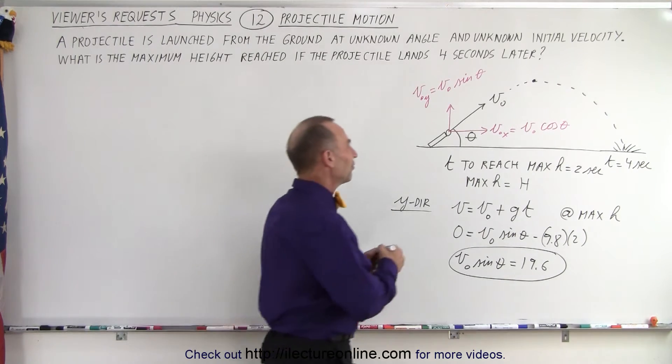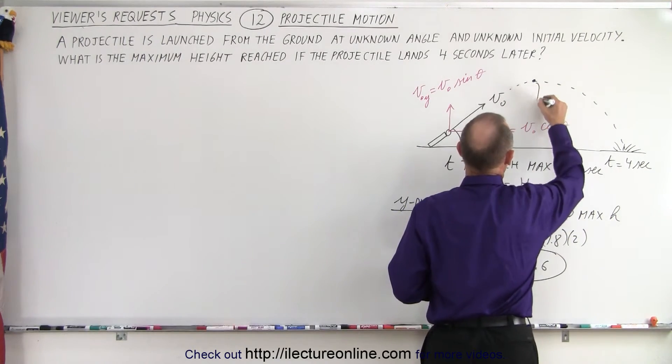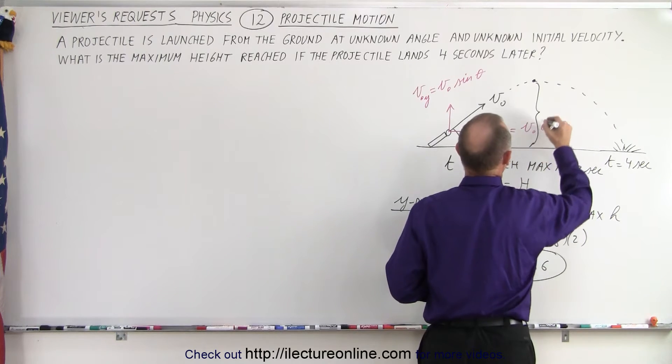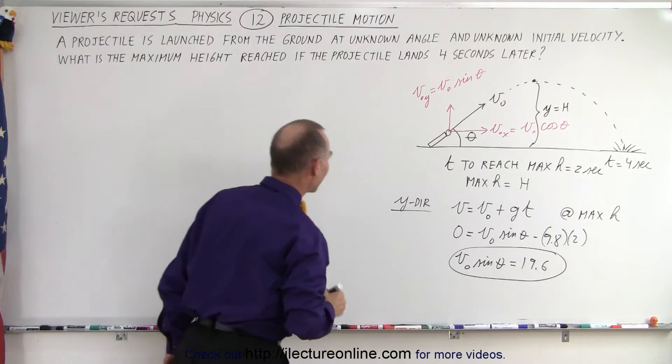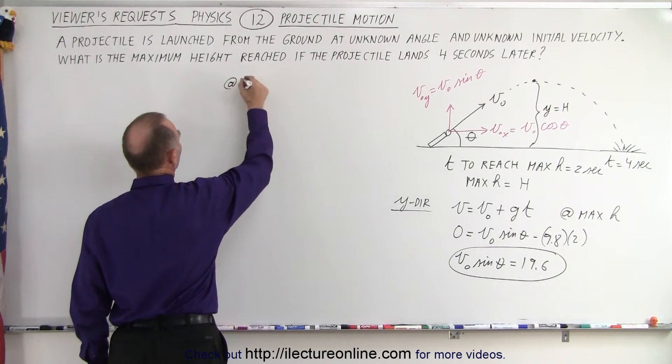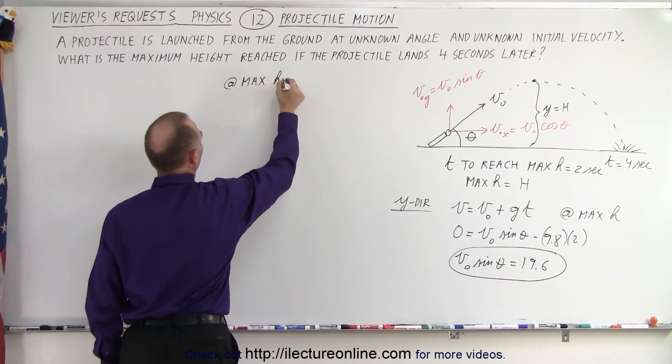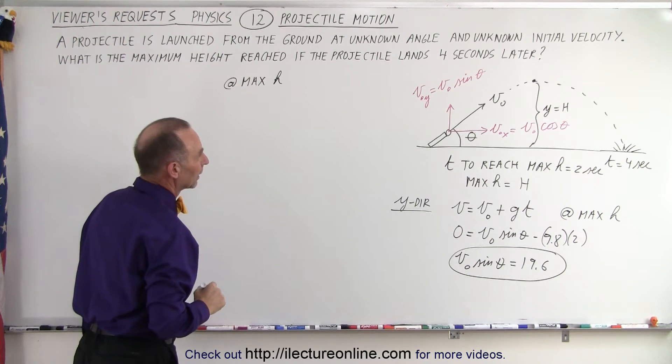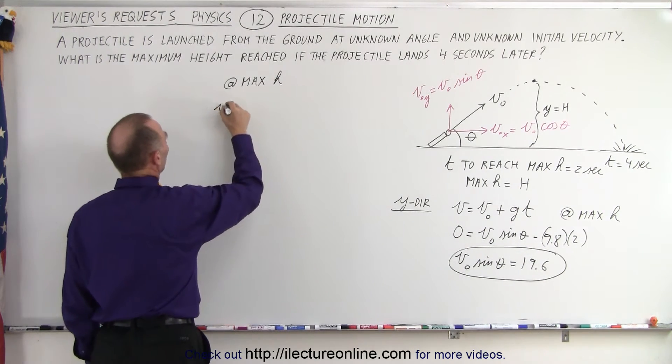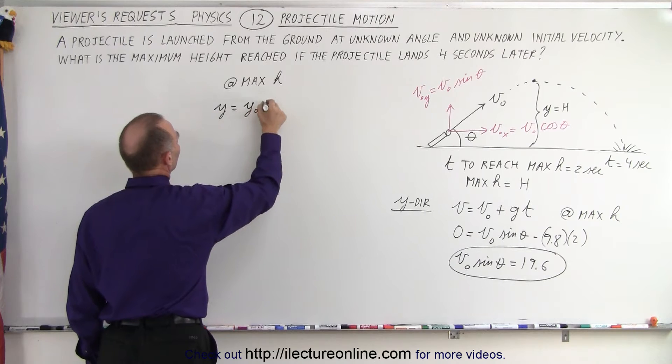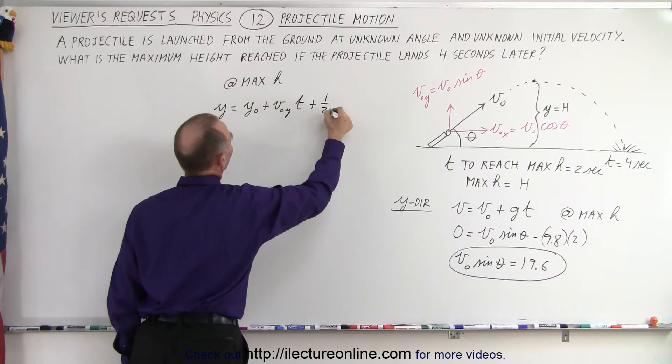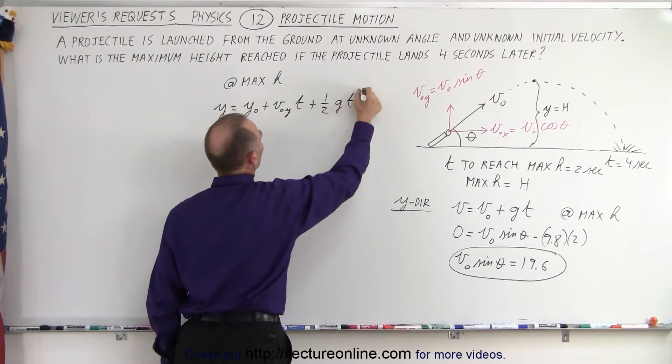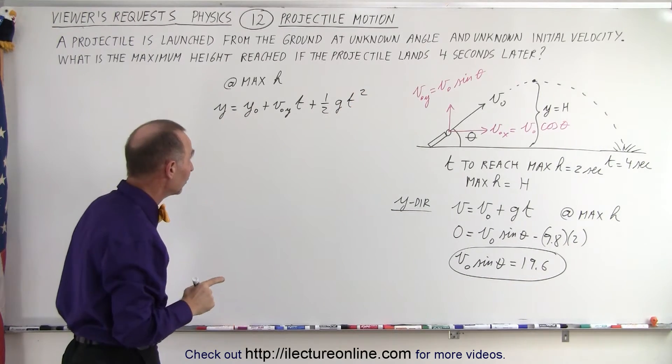Now we need to find out what that maximum height is. So at this point, y equals h at maximum height. We're going to use this equation: y equals y₀ plus v₀ in the y direction times time, plus one-half gt squared. At that height, time is two seconds.